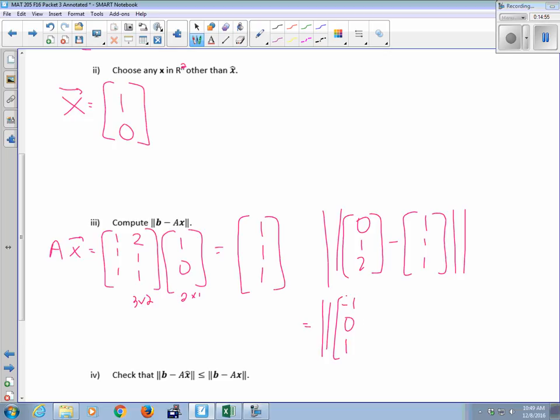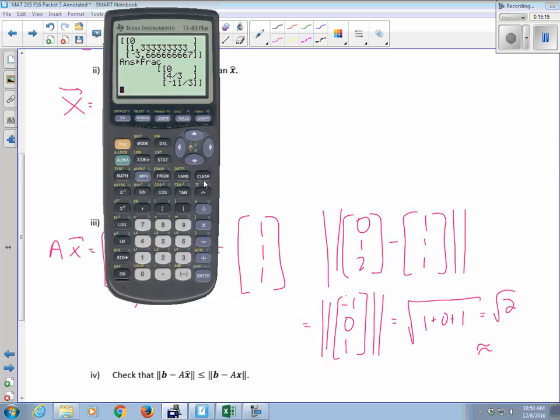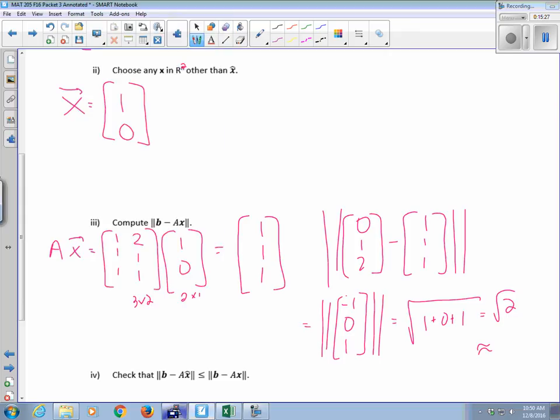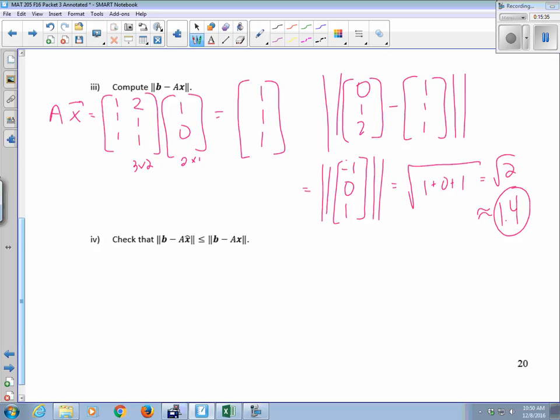So that's going to be the square root of 1 plus 0 plus 1, which is the square root of 2. Anybody know that off the top of their head? Square root of 2 is usually high. We just have to make sure that it's smaller than 0.707. I mean bigger than 0.707. Yeah. 1.4. Okay. So is it true that B minus AX hat was smaller than B minus AX? Yes. And that would have happened no matter what X we chose because X hat is the least. We'll always give you the least error. Yeah.